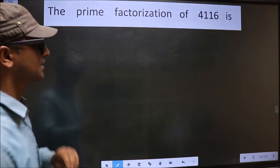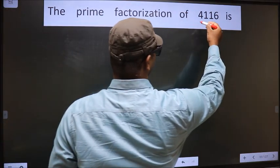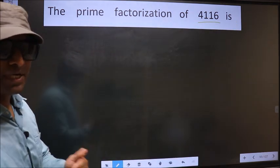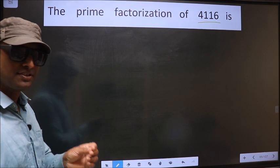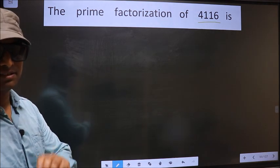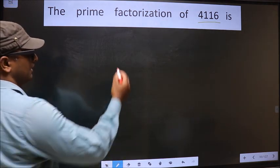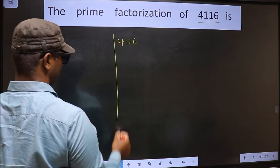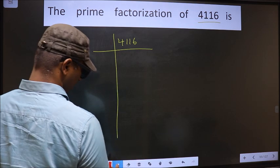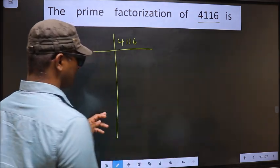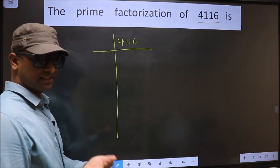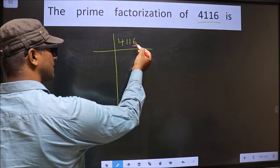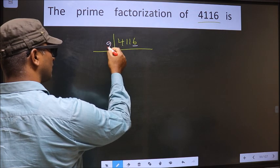The prime factorization of 4116. To do prime factorization, first we frame it in this way — that is 4116. For this number, the last digit is 6, which is even, so we take 2 here.